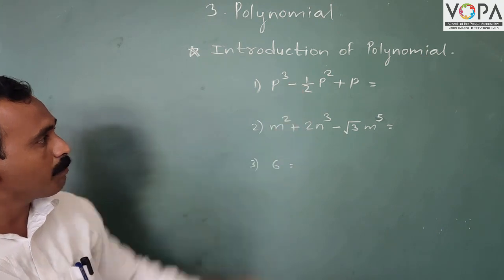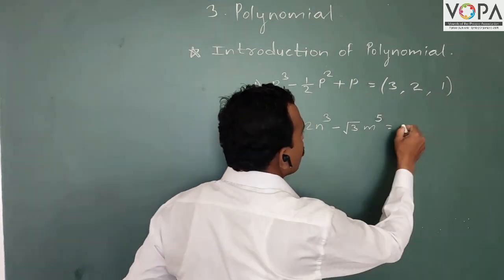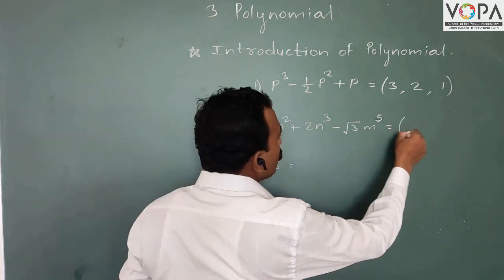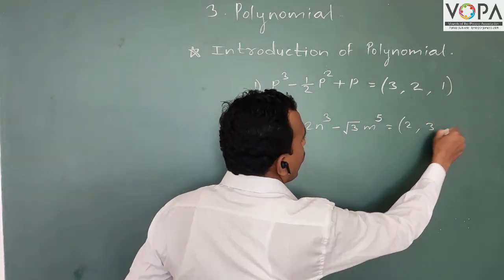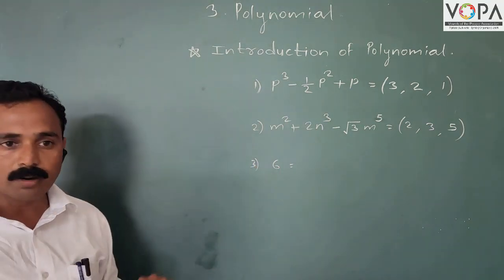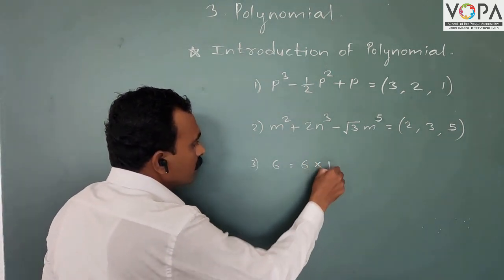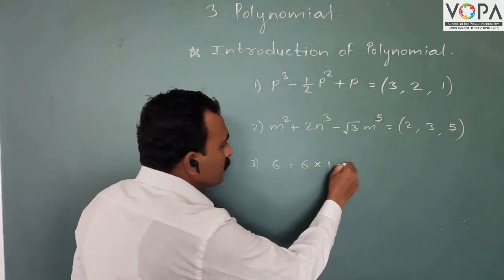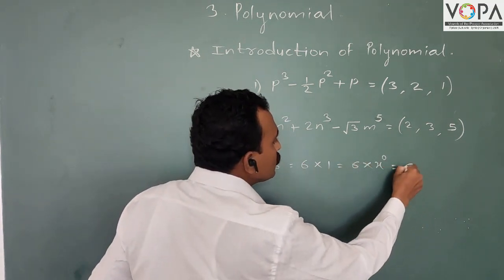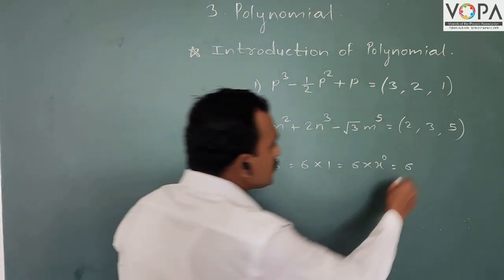In the first algebraic expression, the powers of p are 3, 2, and 1. In the second algebraic expression, the powers are 2, 3, and 5. In the third example, there is only a number with no variable. 6 means 6 multiplied by 1, which is 6 multiplied by x raised to 0, so the index of the variable is 0.